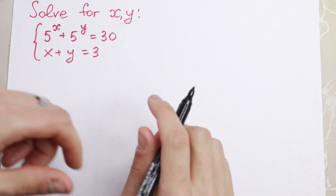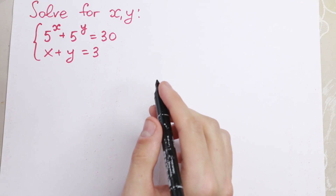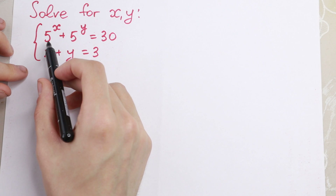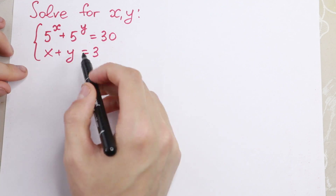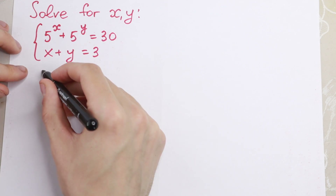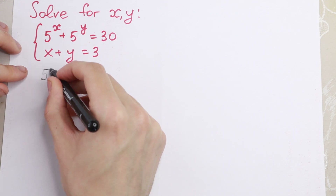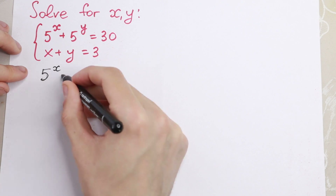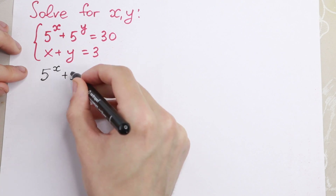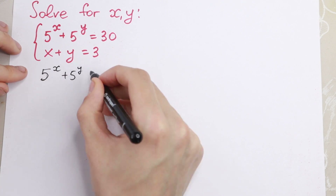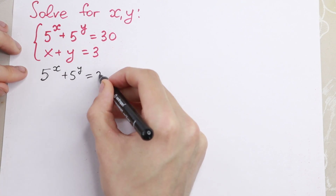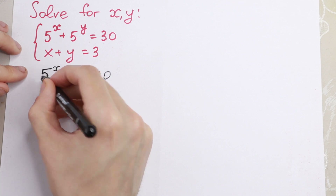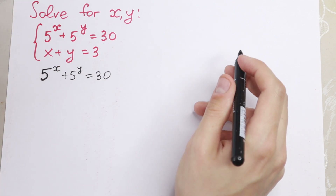What we're going to do in our case? Take a look — I want to suggest a really good method to solve it. I write this first equation: 5 to the power x plus 5 to the power y equal to 30. This is our first equation.